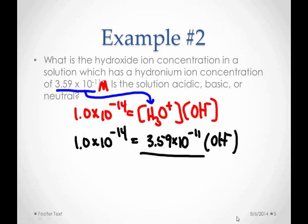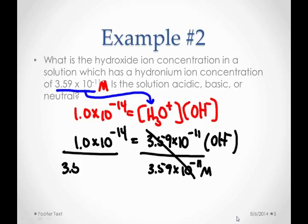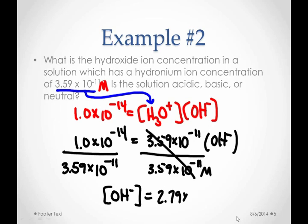I want to divide both sides by 3.59 times 10 to the negative 11th molar so I can cancel that out and get the hydroxide by itself. And once I put these into my calculator and solve for hydroxide, I get 2.79 times 10 to the negative 4th. I'm still paying attention to my significant figures, just like we have all quarter. Box your answer.